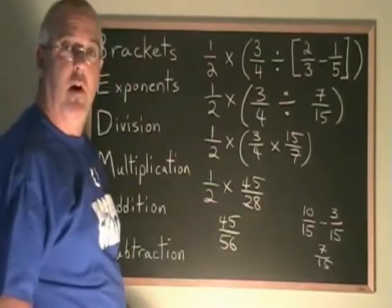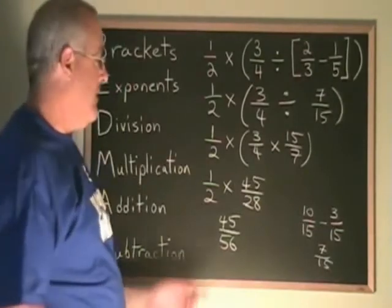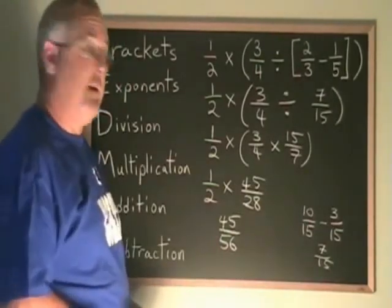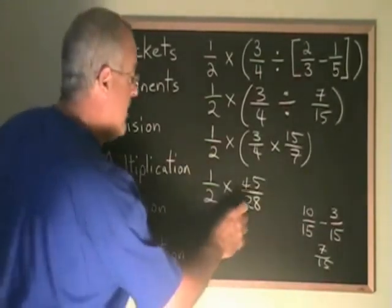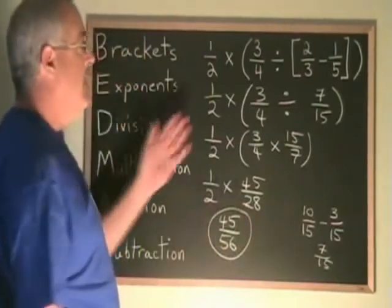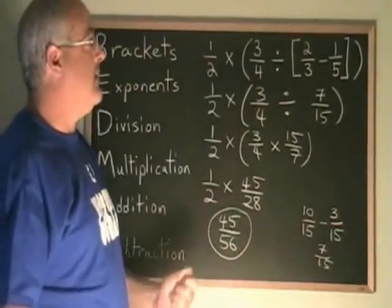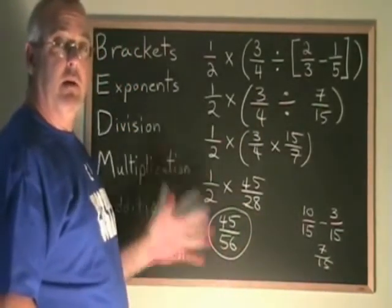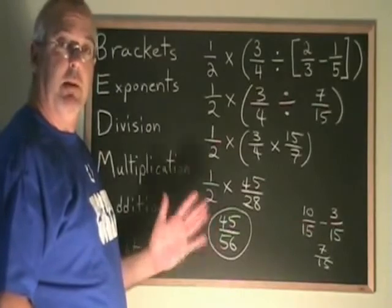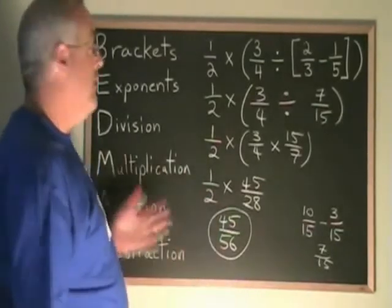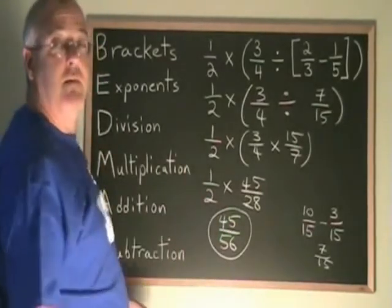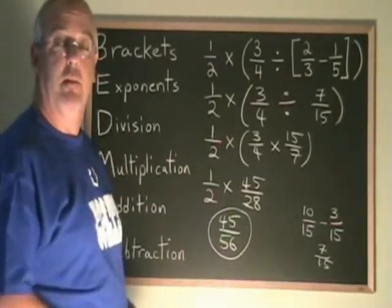These two numbers do not have a common factor, so this fraction cannot be reduced, and it is our answer. Even with brackets and fractions, we can do a multiple step problem if we use the rule of BEDMAS and follow the order of operations.